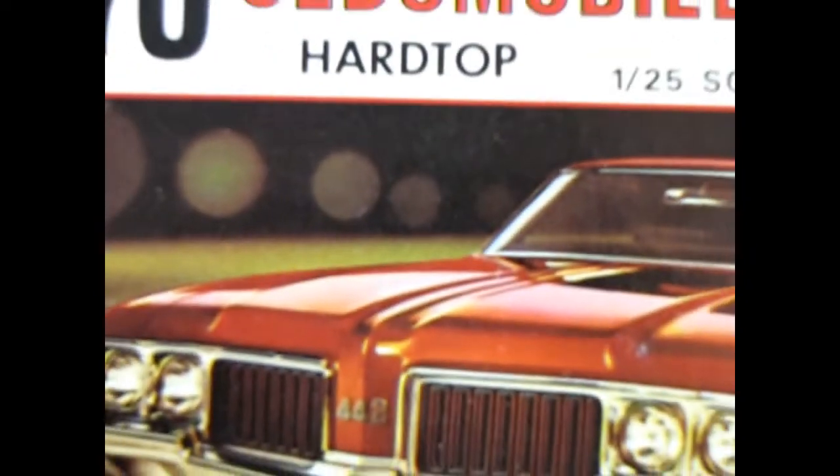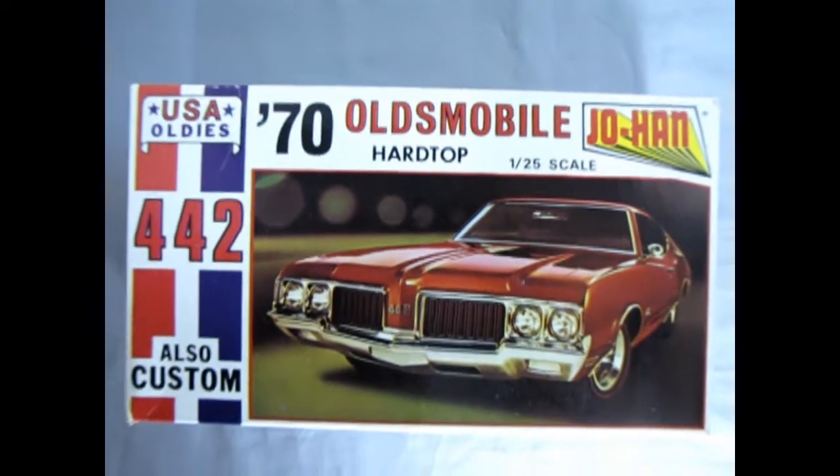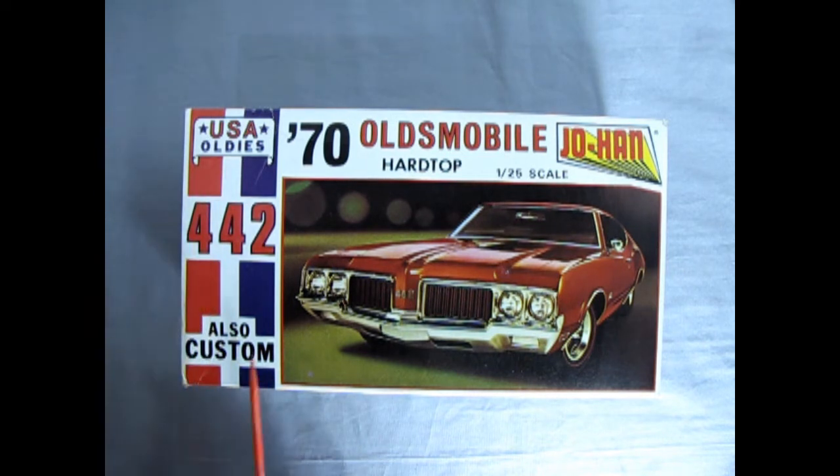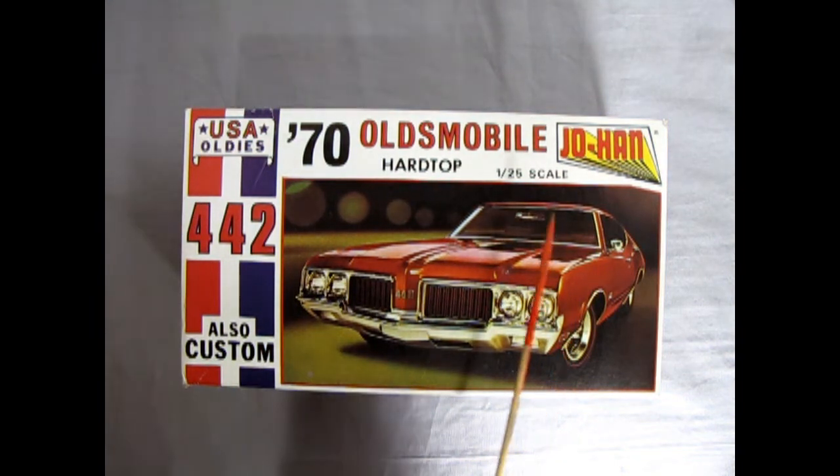So without further ado fans, let's go down and check out this amazing model kit. And now we wind the clock all the way back to 1970 where we get to see our amazing Oldsmobile Hardtop 442. This is of course one of the Johan USA Oldies kits which is also pretty cool. You can build this stock also custom in 1 25th scale.